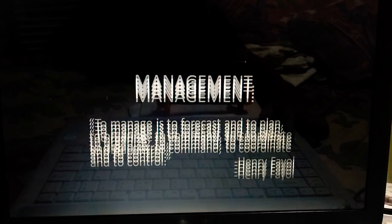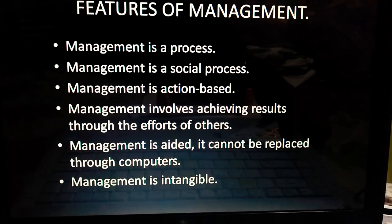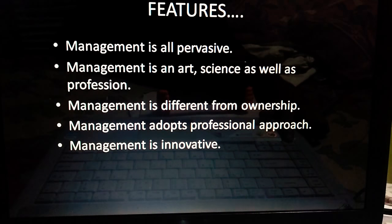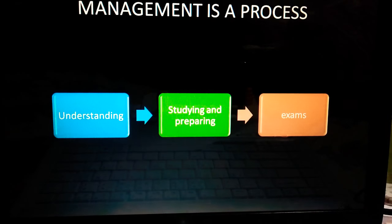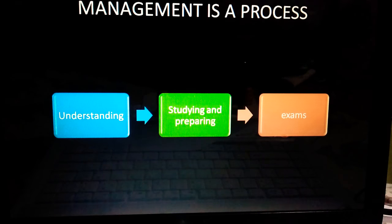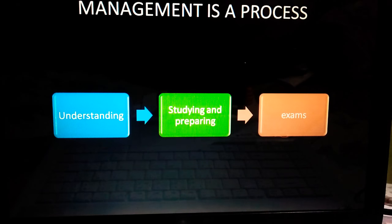Now let's see the features. These are the 10 main features of management; we will study them one by one. The first feature is: management is a process. What is a process? After one task comes a second task, after that task comes a third task. Without the first task being done, the third task cannot happen. All tasks have to be done in the proper sequence.